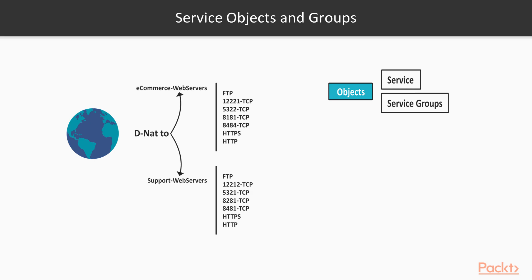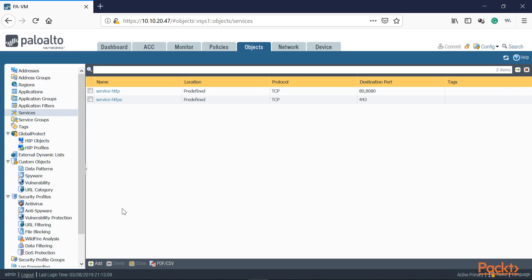On the support web servers, at first glance you might think all the ports are similar — they're not. They have just slightly changing digits. This is why if you don't apply objects into groups, it's very hard to troubleshoot, because at 2am in the morning everything looks the same. Make sure you understand how to create services, how to create service groups, and how to organize that policy table properly. Let's do the first one: 12221 TCP.